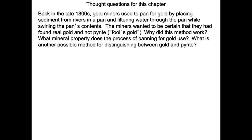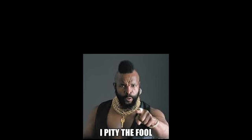Thought question for the chapter: Back in the late 1800s, gold miners used to pan for gold by placing sediment from rivers in a pan and filtering water through the pan while swirling. The miners wanted to be certain they had found real gold and not pyrite. Why did this method work? What mineral property does panning for gold use? And what is another possible method for distinguishing between gold and pyrite? Well, it's the specific gravity — the density of gold forces it to the bottom of the pan; you scrape away the low-density material and you have the gold concentrated. Another method: specific gravity is very obvious since a chunk of gold weighs five times as much as a similar chunk. Also, the streak — gold has a gold streak, while pyrite has a dark green streak. So unless you're a real fool, you're not going to mistake pyrite for gold.